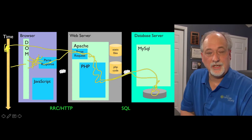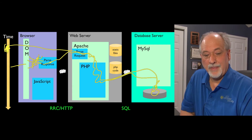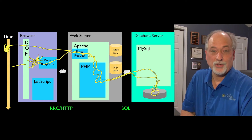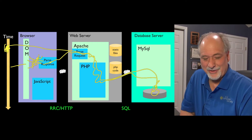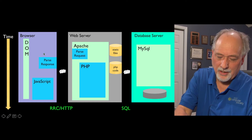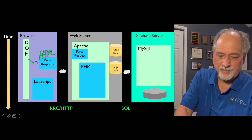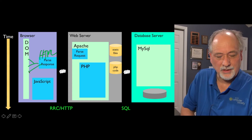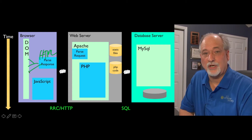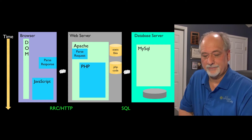What we see is the document object model, and we're going to ignore most of that in this lecture. We are really only going to talk about this part here — what the response is. It's HTML, and it is parsed and read through and used to construct the document object model, which then shows what we see.